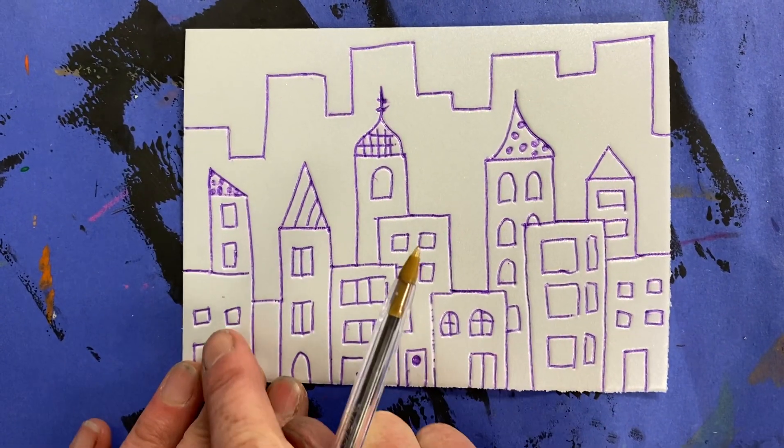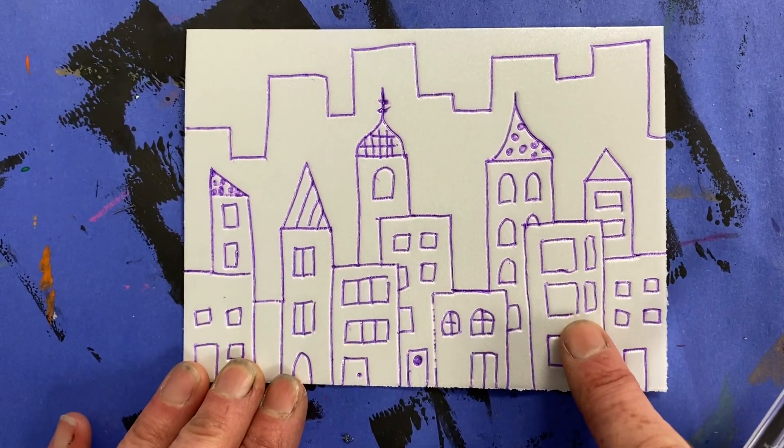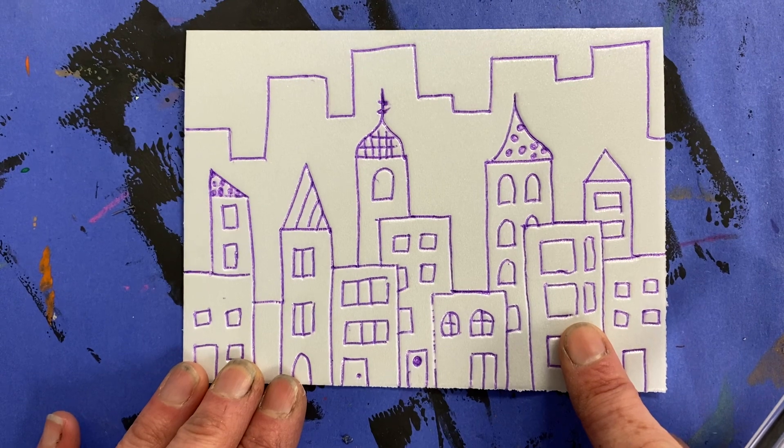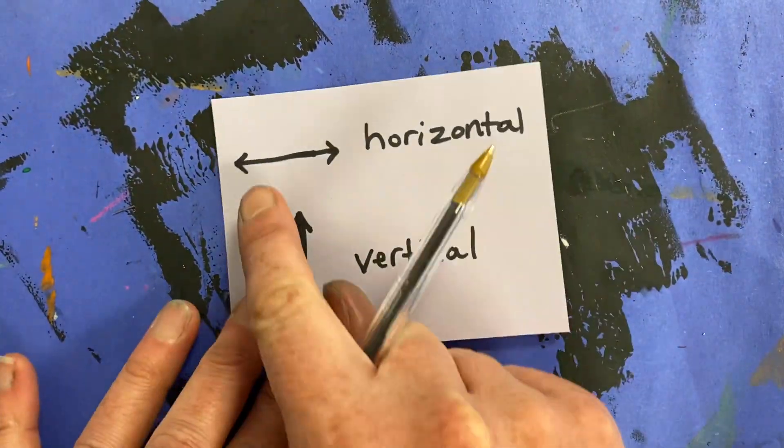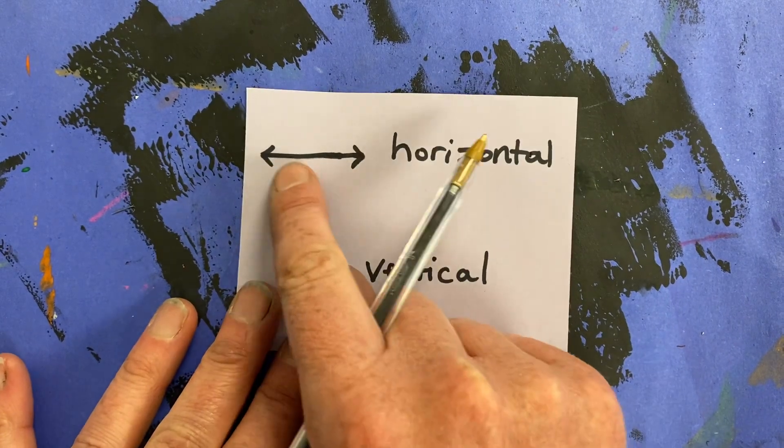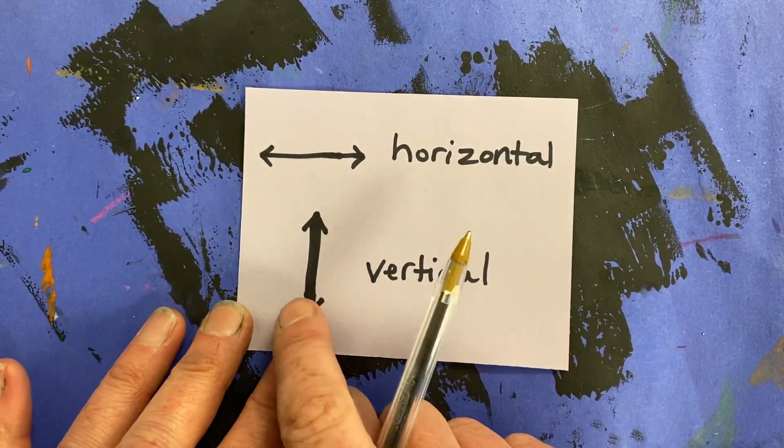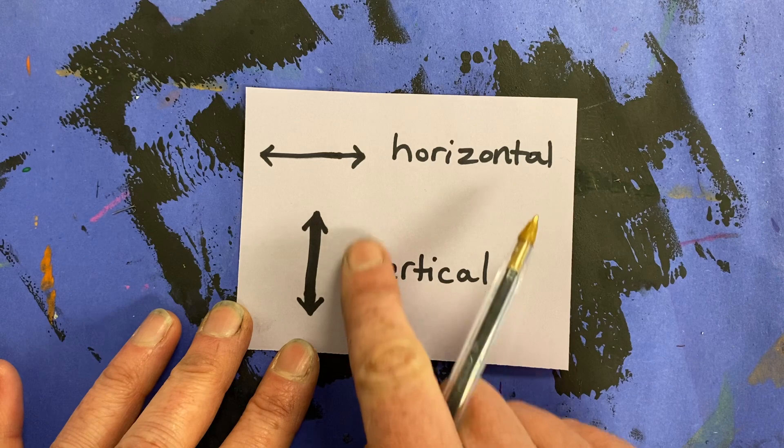We will begin our project by making buildings in the foreground of our cityscape. And to make these buildings, you are only going to be using horizontal lines, so those are lines that go sideways, and vertical lines, lines that go up and down.